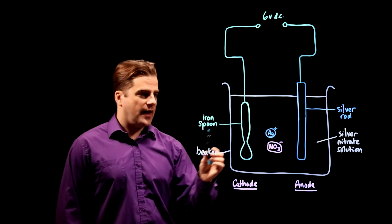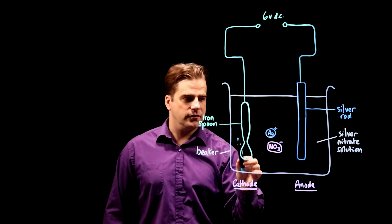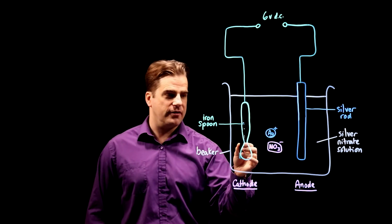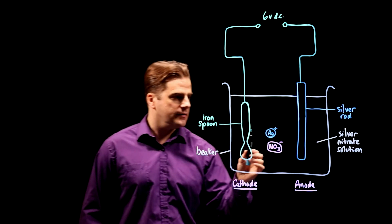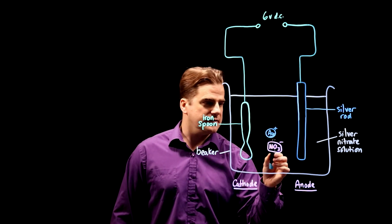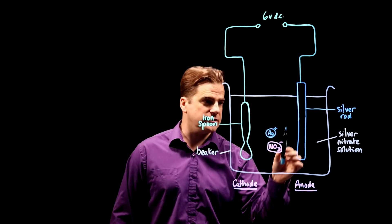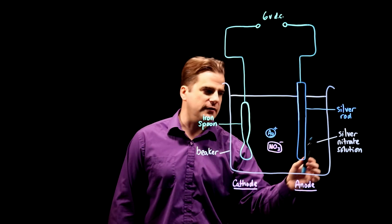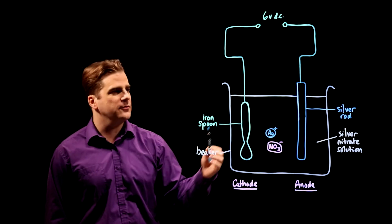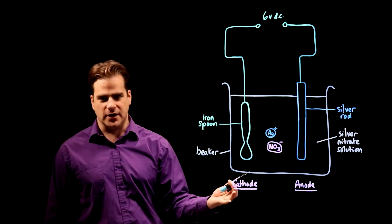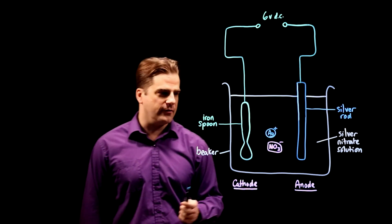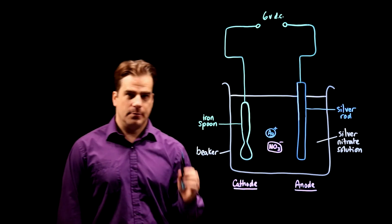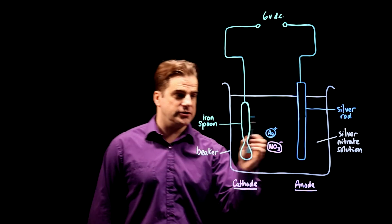You know that the iron spoon is going to end up getting coated with silver. And there are silver ions in the solution. In the question it hasn't told you that it's silver nitrate solution but with silver electroplating that's what they use so I've added that in. The iron doesn't matter. That's the nitrate ion. The important thing is you have silver ions in the solution.